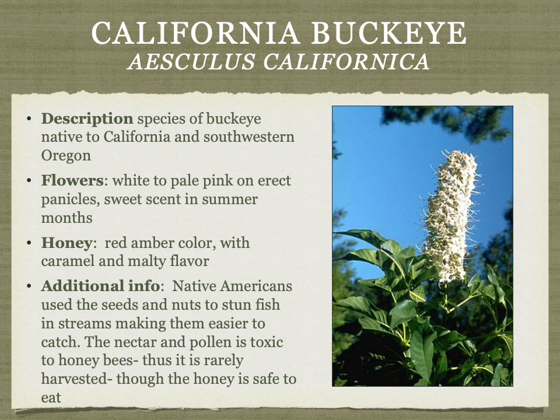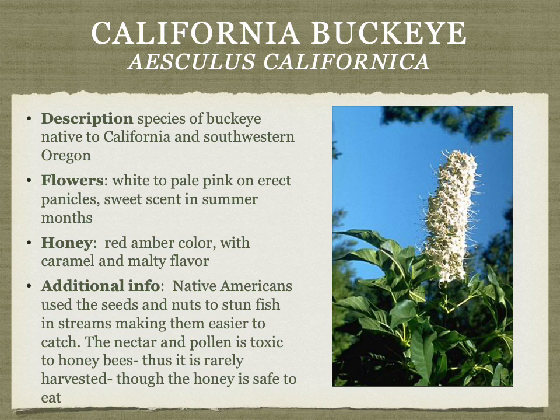California buckeye honey is red-amber colored with a caramel, multi-flavor profile — actually quite a good honey. Interestingly, the nectar and pollen are toxic to honeybees, so beekeepers try to avoid placing hives near large stands of it. However, if harvested, the honey itself is safe to eat. Native Americans used the seeds to stun fish in streams — they'd mash them into the water and collect the fish as they floated up.